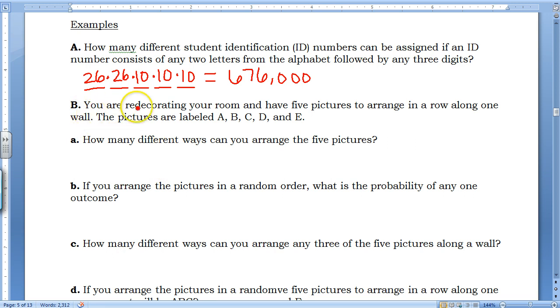Letter B says you are redecorating your room and have five pictures to arrange in a row along one wall. The pictures are labeled A, B, C, D, and E. How many different ways can you arrange the five pictures? Well, if you want to arrange all five pictures, we need five spaces. And if I have five things to choose from, that means I have five choices for the first space.